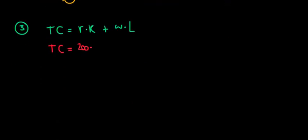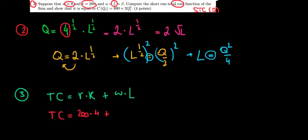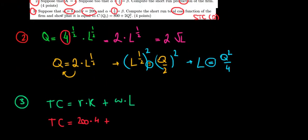So 200 times 4 plus the wage. The wage is equal to 8. So the wage is 8 times L, and L we wrote before as Q square over 4. So L is a function of quantity and that's exactly what we want - Q square divided by 4.